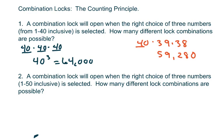And the same thing for this one: three choices, but it's 1 through 50 inclusive, so that's 50 cubed, which equals 125,000 possible ways.